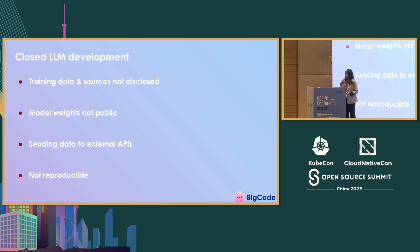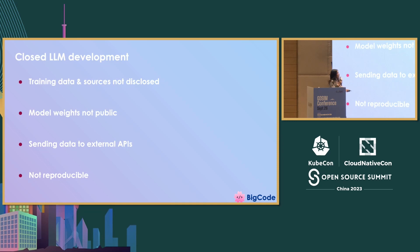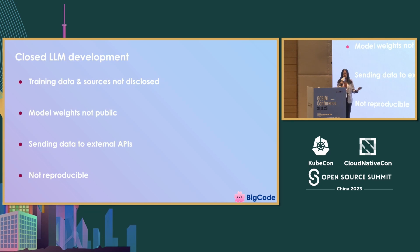Why did we start BigCode? It's because we wanted to address some of the concerns in the closed development of these models. This starts with not releasing the training data — most models released now, for example even LLaMA or CodeLLaMA, didn't release their training data and don't give a lot of details about how they curated it. Then there's not releasing the model weights, as is the case for GPT-4 or ChatGPT. If you want to fine-tune these models, it's not easy because you don't have the checkpoints, and you would need to send your data to them. Sometimes you might have sensitive data you don't want to send to a third party. Needless to say, this makes these models and their performance not reproducible.